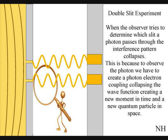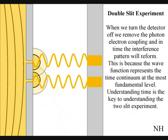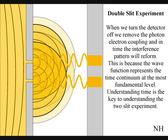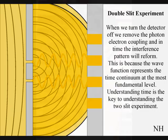If we turn the detector off, we remove the photon-electron coupling, and in time, the interference pattern will reform. Just like in Newton's first law of motion, the interference pattern will continue to maintain its state, unless acted upon by an external force.